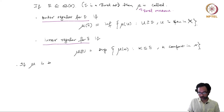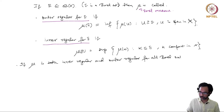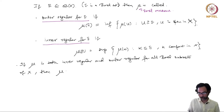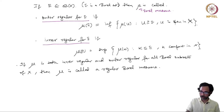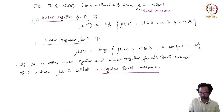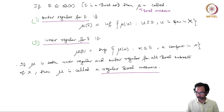If mu is both inner regular and outer regular as a Borel measure for all Borel subsets in x, then mu is called a regular Borel measure. So if both conditions — outer regularity (condition 1) and inner regularity (condition 2) — are satisfied for all Borel sets, then mu is called a regular Borel measure.